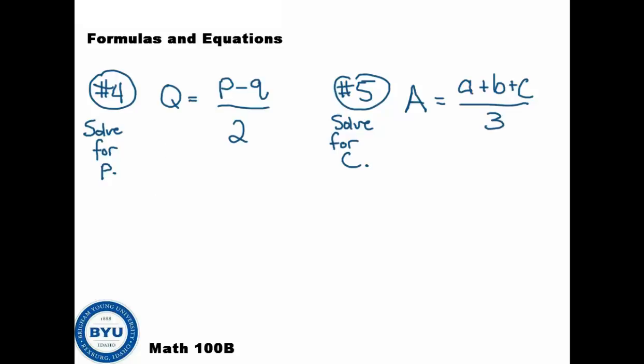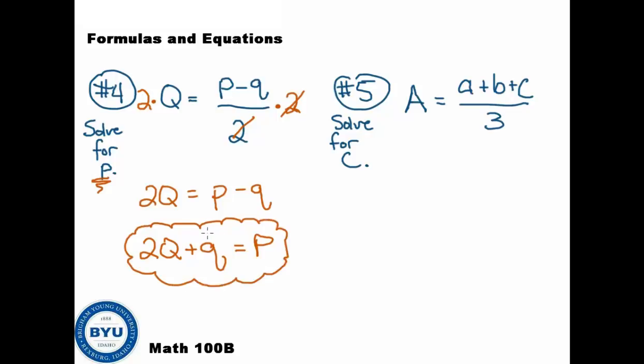Okay, so on this problem here, on this number 4, we would want to get rid of the fraction. Get rid of this divide by 2. To undo divide by 2, we use the law of opposites and multiply both sides by 2. That gets us 2q equals, these would cancel out because they're opposites, equals p minus q. Again, we're trying to get p by itself, so I need to undo the minus q. The opposite of minus q would be to add q. And that would be our final answer for p. p equals 2q plus little q. Oh, there's a big q and a little q.